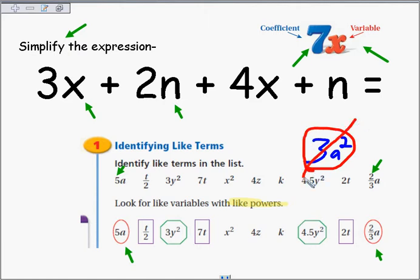And the answer is no, I can't. Why? Because they're not like powers. a squared is a different power than a to the first power. And that's kind of what tripped us up on this. So they have to have like powers, identical letters, like powers. Identical letters with like powers.